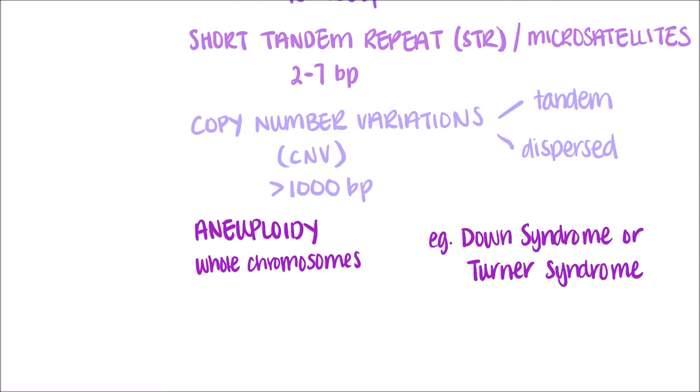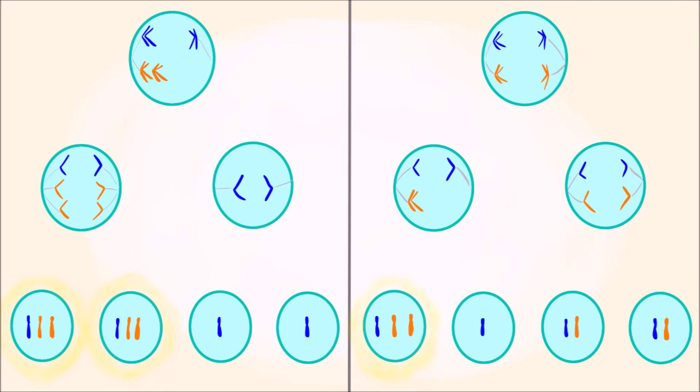As you have previously seen, this could happen with Robertsonian translocations in some people, but it could also occur from non-disjunction in meiosis 1 or meiosis 2. If homologous chromosomes fail to separate in meiosis 1, as shown on the left, or the sister chromatids fail to separate in meiosis 2, as shown on the right, then some of the resulting gametes will have an extra copy of a chromosome.